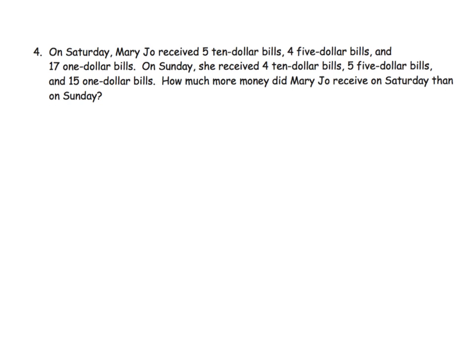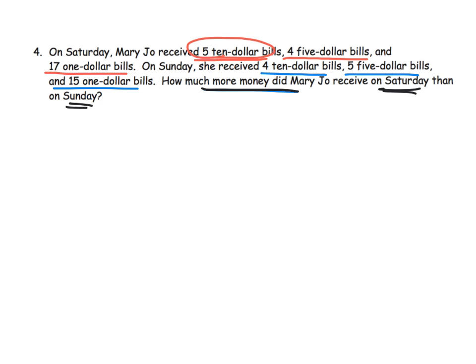On Saturday, Mary Joe received five ten-dollar bills, four five-dollar bills, and seventeen one-dollar bills. How much more money did Mary Joe receive on Saturday than on Sunday? The first thing we have to do is figure out how much she received on Saturday. Five ten-dollar bills is fifty; four five-dollar bills — five, ten, fifteen, twenty — so that's twenty.